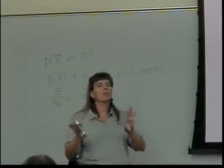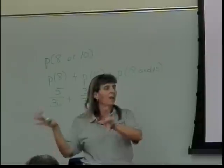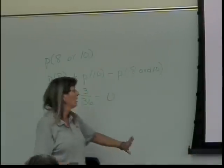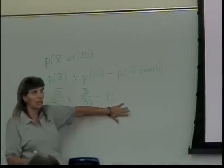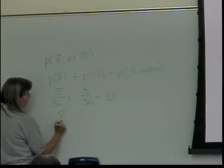So what does that tell me about those two kinds of things? Getting an 8 is one event, and getting a 10 is the other event. They're mutually exclusive because they can't both happen at the same time. So when I put this together, I get 8 over 36.